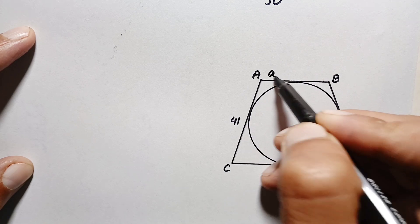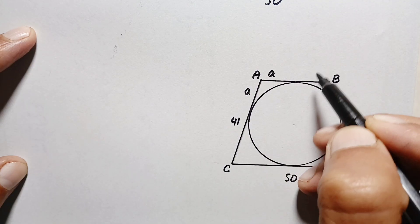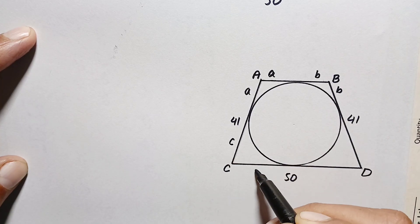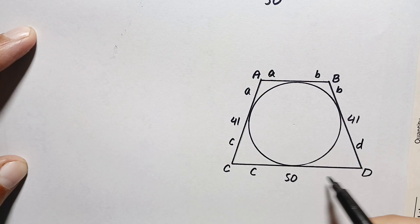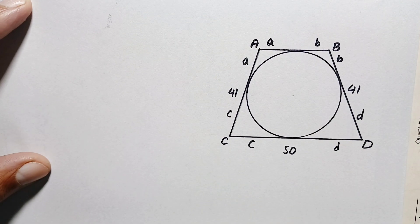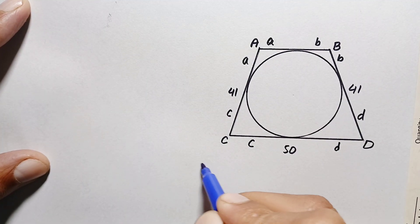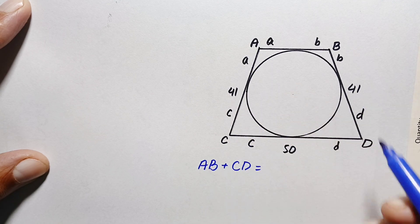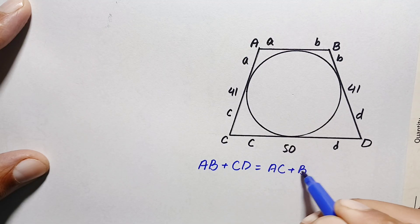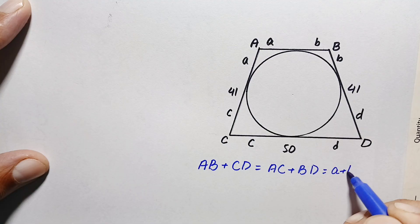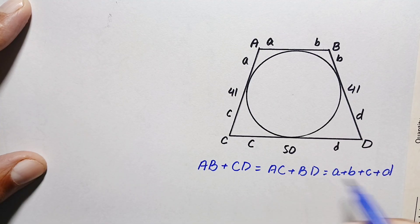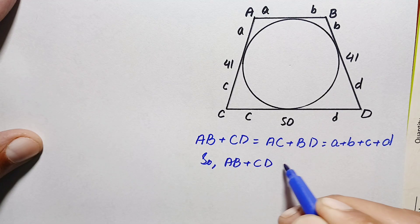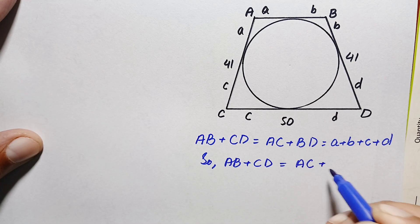Let us suppose one tangent segment equals small a, so the other from the same point also equals a. Similarly, if one segment is small b, the other is also b; if small c, then c; and if small d, then d. From this figure we can write: AB + CD = AC + BD.